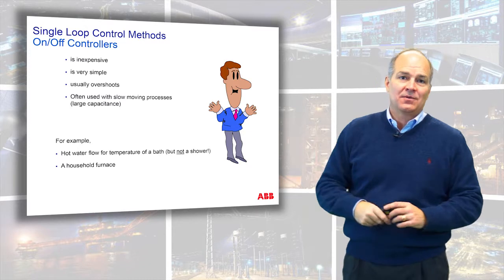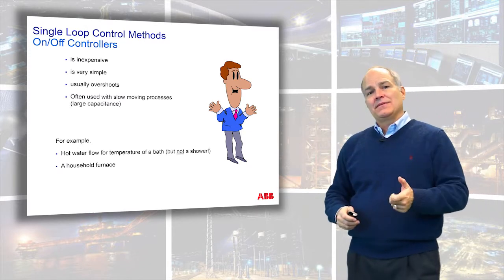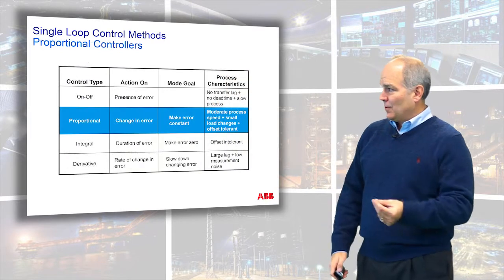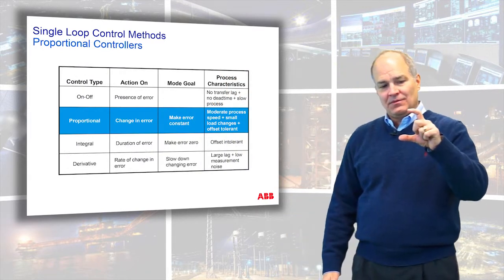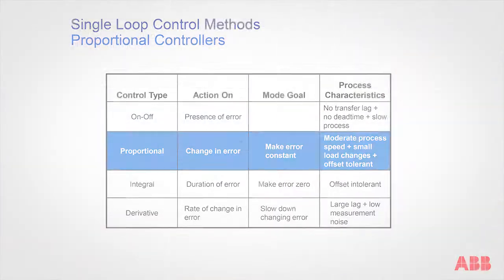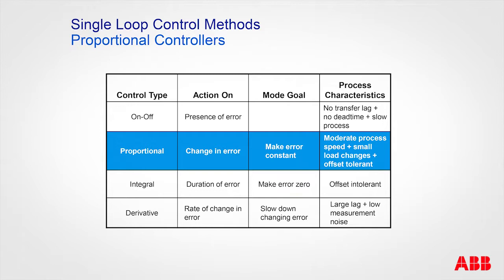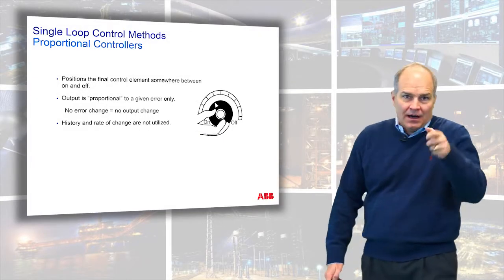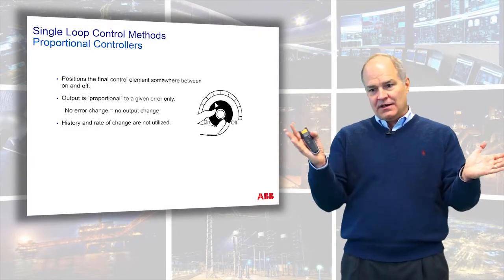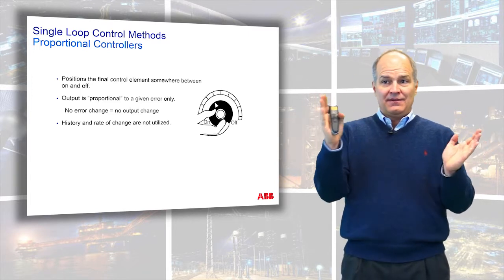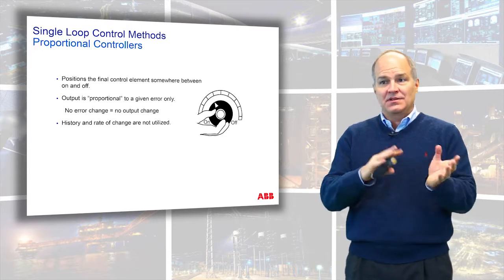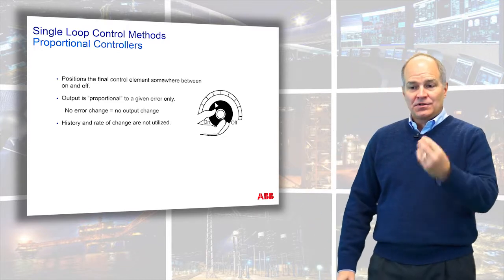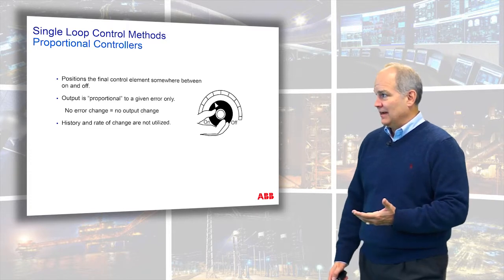If you want to go beyond on-off, that's when we have to start understanding proportional control. Proportional control's goal is to work on the change in error — it's very important to realize its goal is not to make the error zero, but to make the change in error zero. Like a knob, with proportional your output could be somewhere between zero and 100%, so you need an actuation device that allows a variable output.